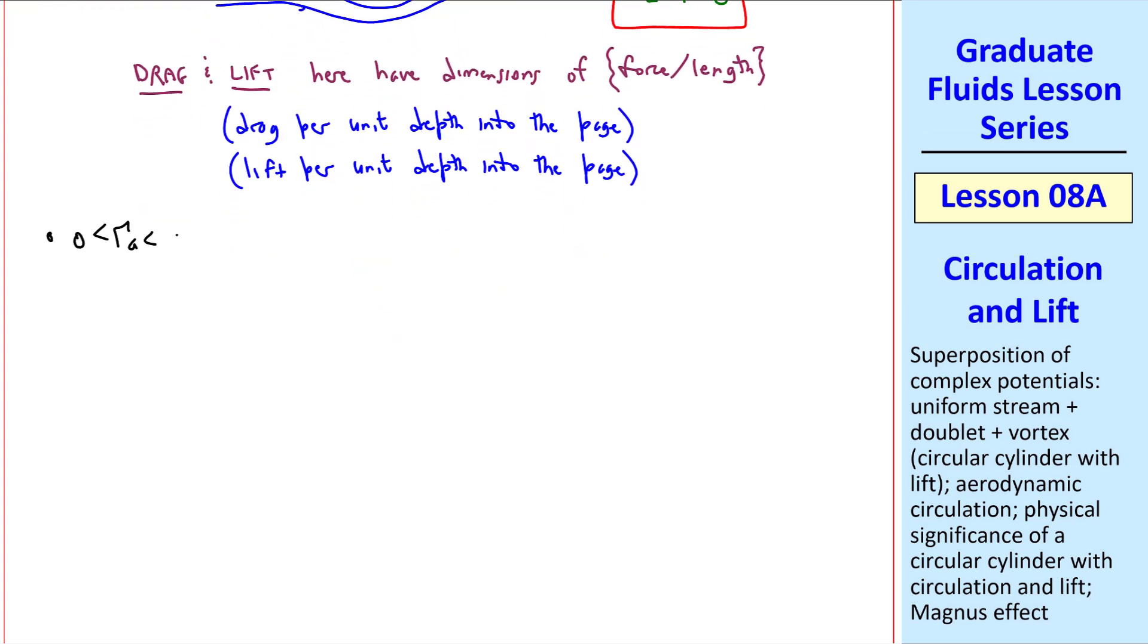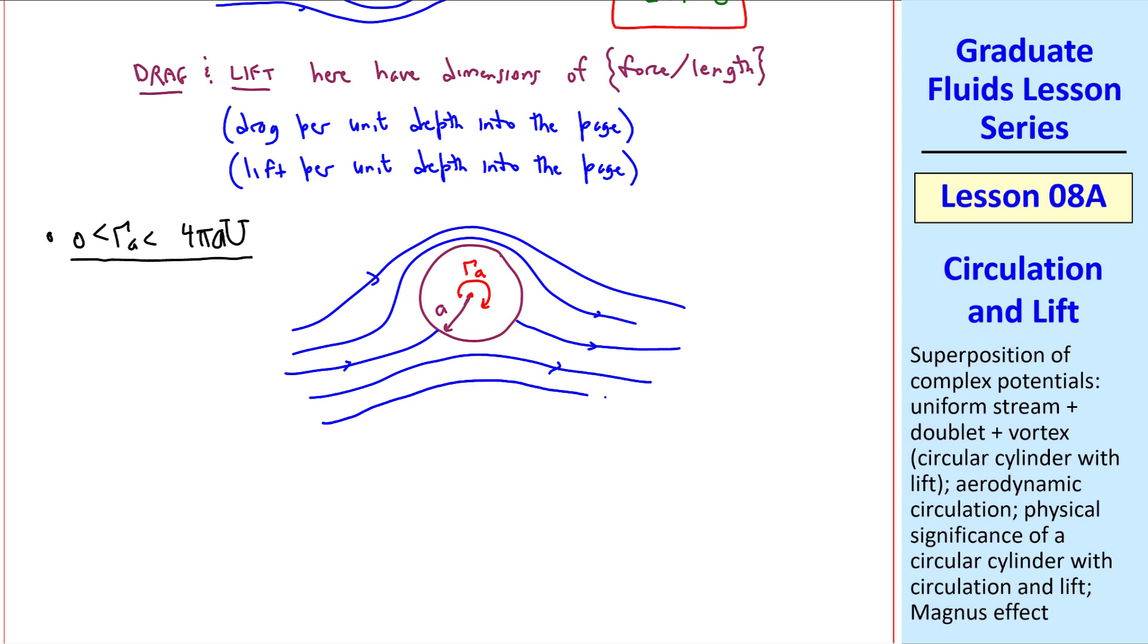Now what happens when gamma A is between zero and four pi AU? While we still have the same circle of radius A, now with circulation gamma A that's non-zero, it turns out that this distorts the streamlines. It's still symmetric from right to left, but not from top to bottom. And the streamlines look something like this. Notice that the streamlines are much closer together at the top than they are at the bottom, which implies higher speed at the top than at the bottom.